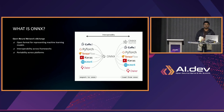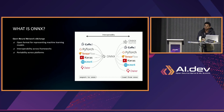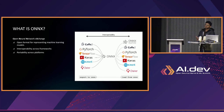Another key principle ONNX is built on is portability across different platforms. This means you could use the same ONNX file and deploy it across different devices without having to make any modifications. You could take a model running on GPU and run the same model on a CPU without making any significant changes — allowing you as a developer to work with different devices without worrying about where your application is being deployed.